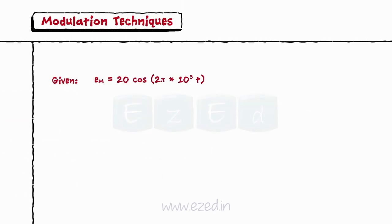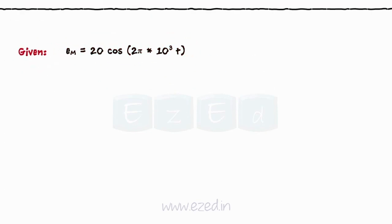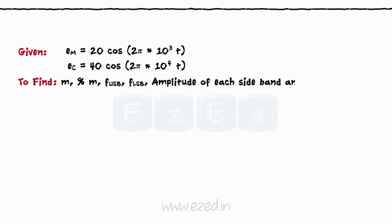We have Em = 20 cos(2π × 10³ t) and Ec = 40 cos(2π × 10⁴ t). We need to find modulation index m, percentage modulation, frequency of upper sideband and frequency of lower sideband.